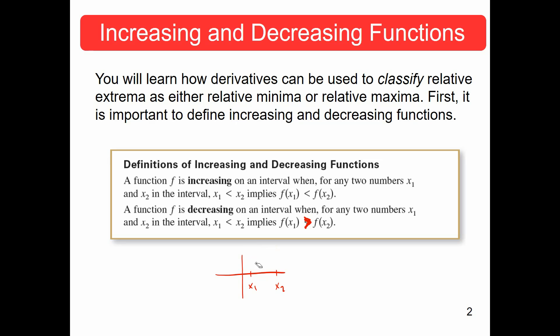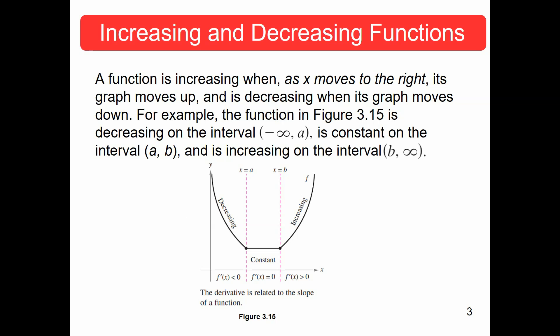Now, if x1 is less than x2, and the y-value associated with x1 is greater than the y-value associated with x2, then we can see it's decreasing. Graphically, we can look at these and say this one is falling from left to right, therefore it's decreasing; this one is rising from left to right, so it's increasing.